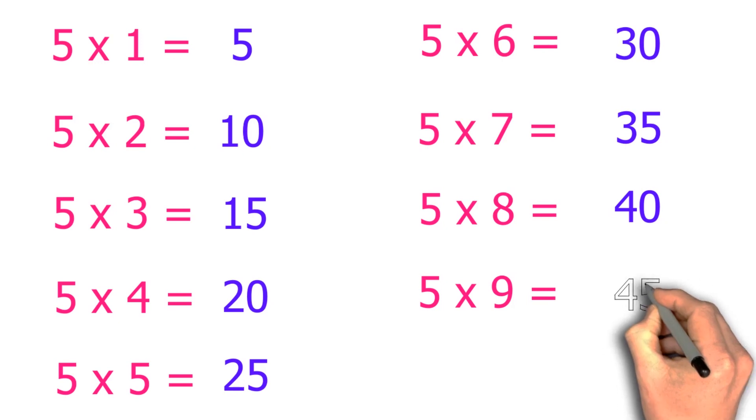Five nines are forty-five. Five tens are fifty.